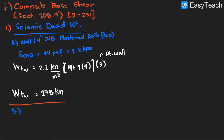Next up is our slab — a concrete slab. Let's assume we have a 5-inch thick concrete slab. Based on our floor system analysis, we have designed the beams, columns, and slab thickness. The slab was designed to be 5 inches thick, which is equal to 0.125 meters.